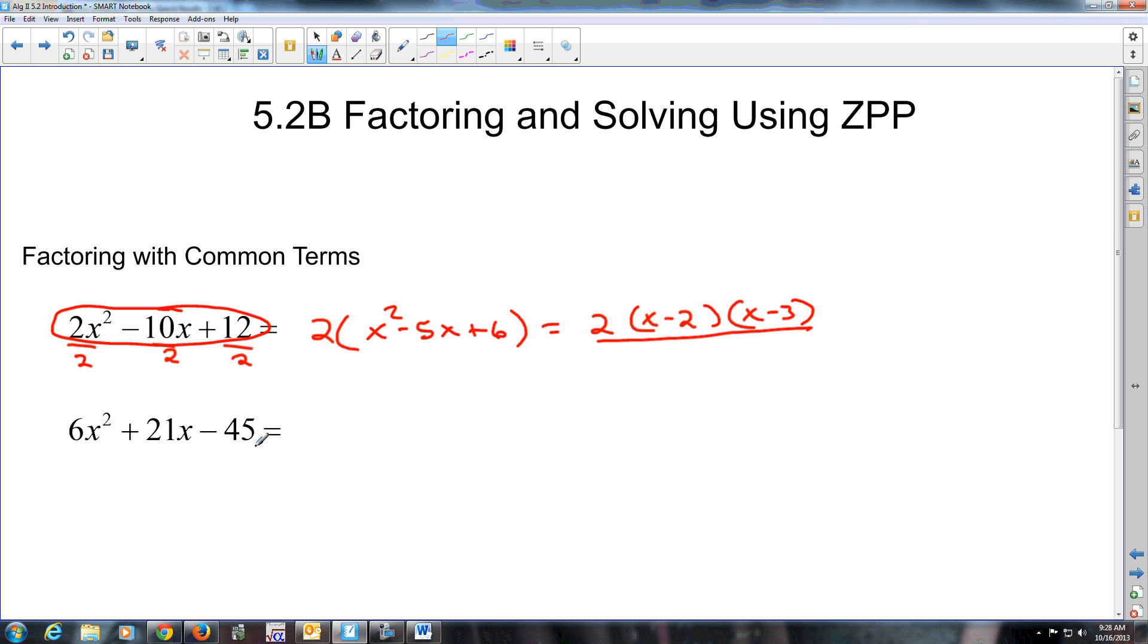Here, there's only a 3 that's in common with all of them, not the 6. The 3 is the only thing in common. To help you see what's left, you can pretend to divide by 3. So then you get 2x squared plus 7x minus 9.